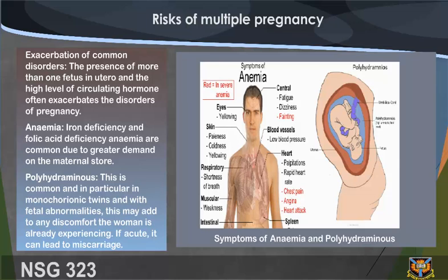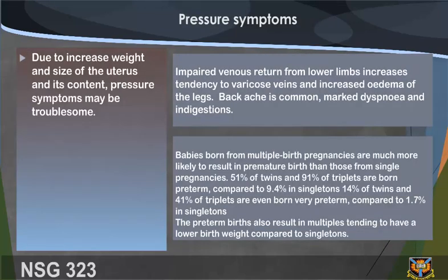Risks of multiple pregnancy include exhibition of common disorders. The presence of more than one fetus in utero and high levels of circulating hormones often exacerbate the disorders of pregnancy. Anemia: iron deficiency and folic acid deficiency anemia are common due to greater demand on maternal stores. Polyhydramnios is common, particularly in monochorionic twins and with fetal abnormalities; if acute, it can lead to miscarriage. Pressure symptoms due to increased weight and size of the uterus may cause backache, marked dyspnea, and indigestion.